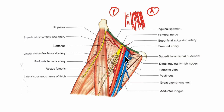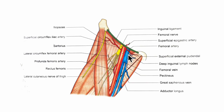Looking at the posterior relations of the femoral artery, we have the psoas major muscle, the pectineus muscle, the adductor longus muscle, and the posterior wall of the femoral sheath that intervenes between these structures and the artery. The femoral artery is related medially to the femoral vein. Just below the inguinal ligament, the femoral vein is medial to the artery; the vein gradually crosses to the lateral side to lie posterior to the femoral artery, and it is directly behind the artery at the apex of the femoral triangle.